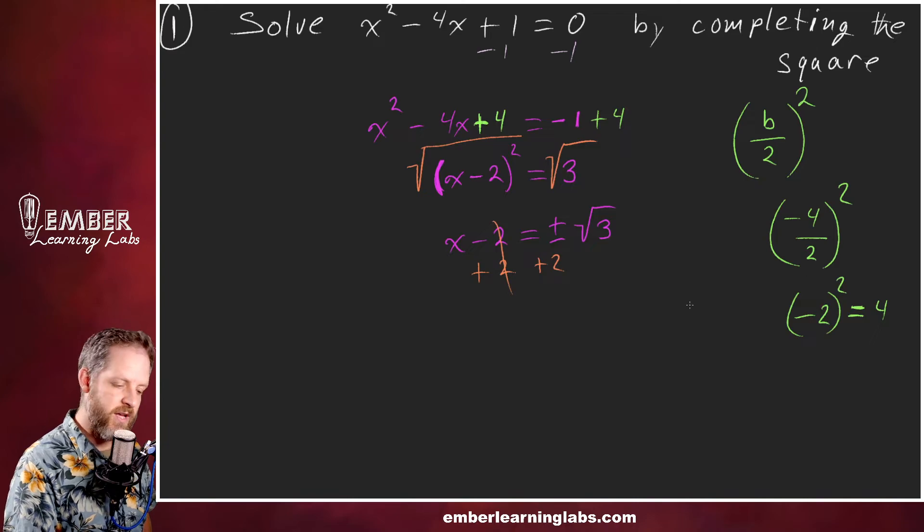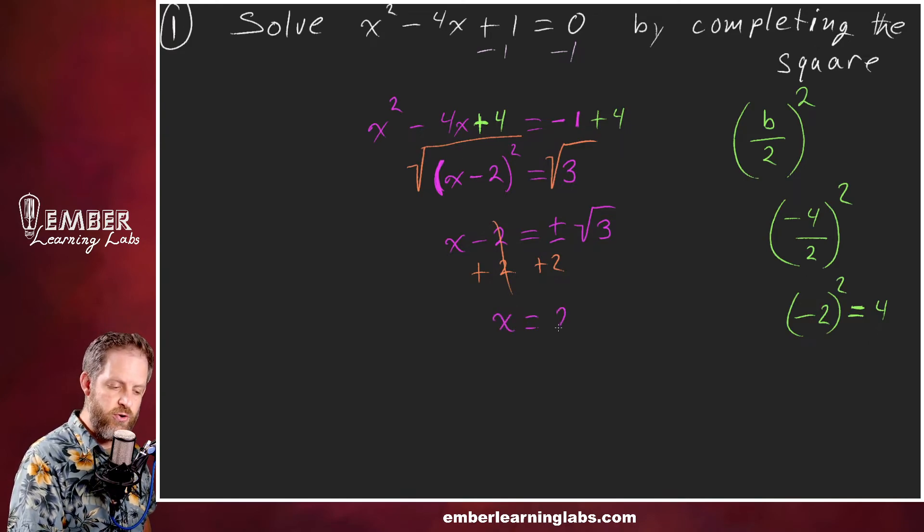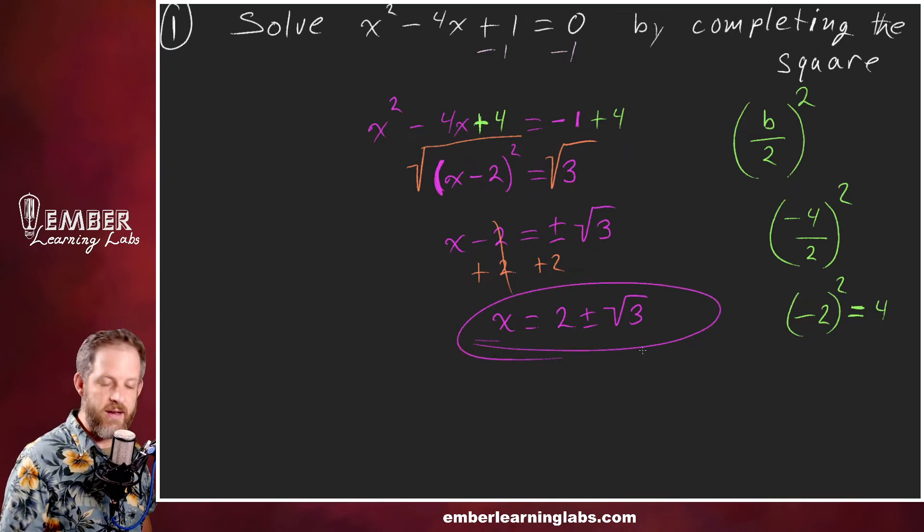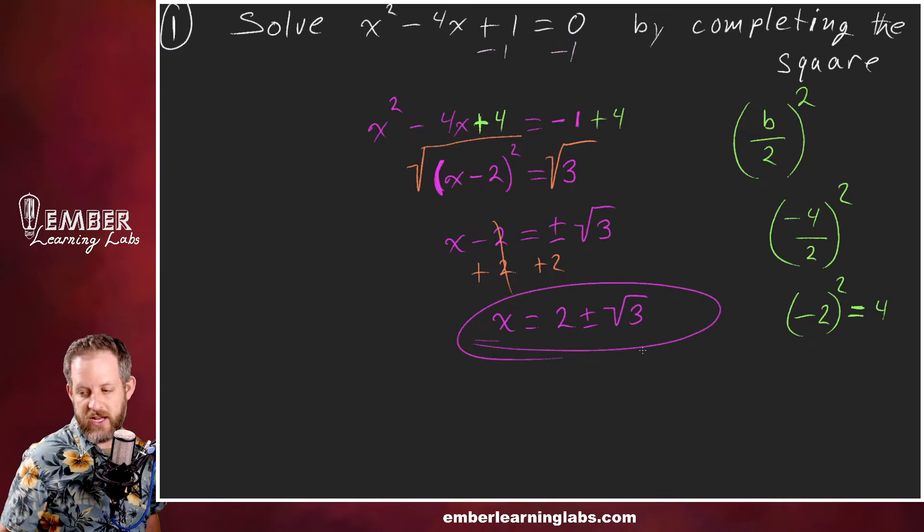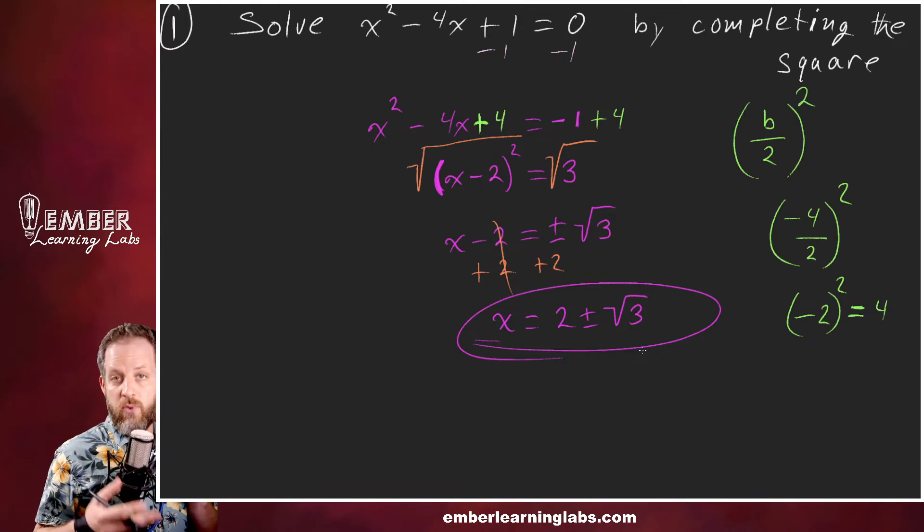That one cancels, leaving us with just an x. So x equals 2 plus or minus the square root of 3. Very often in a math class we want the exact answer, so we'd circle that and move on with our life.